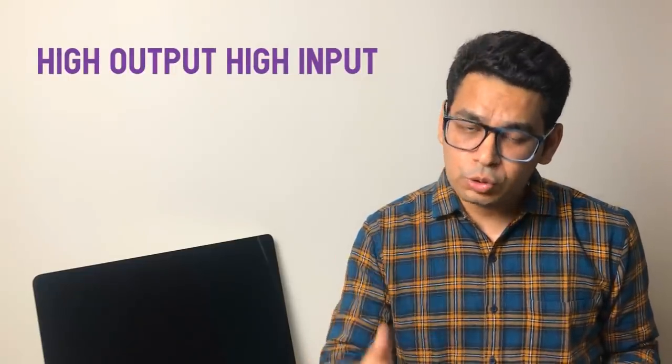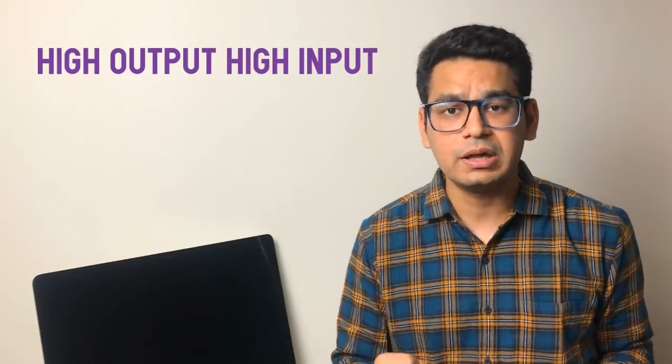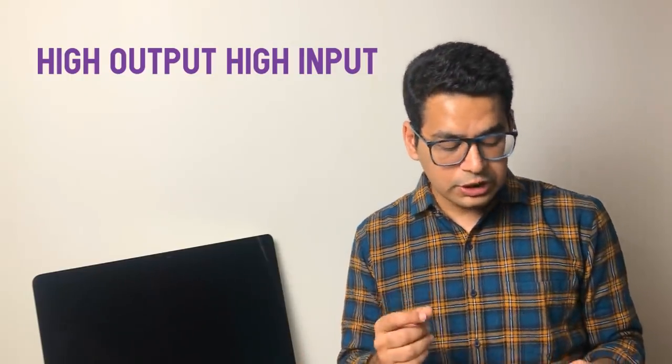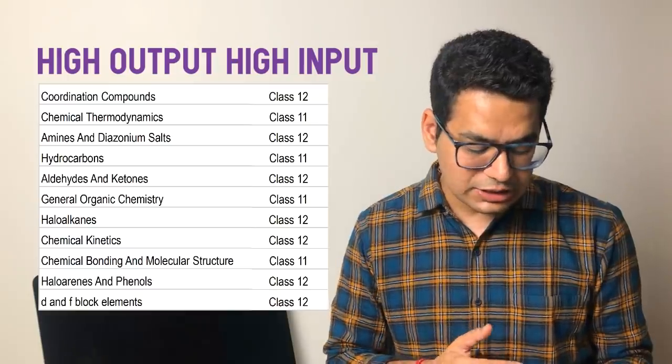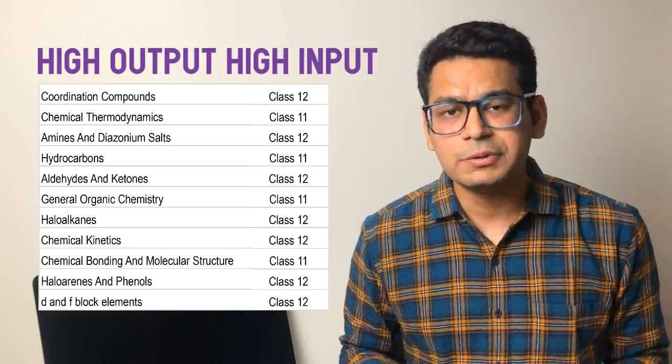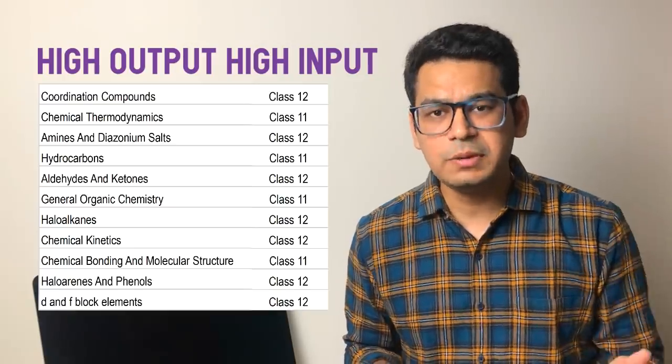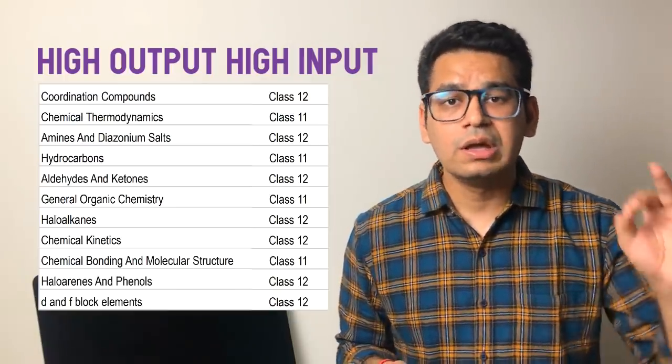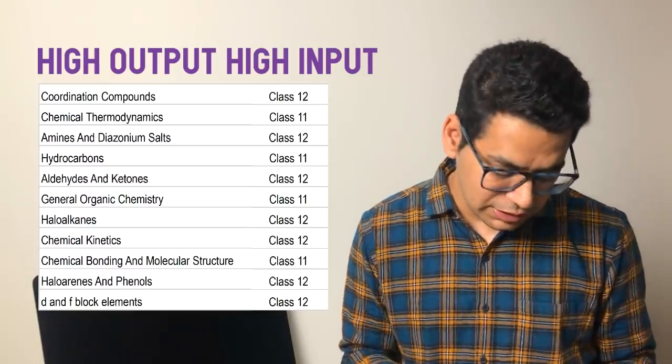Next is high output, high input. Meaning you have to give high input - input means you have to put in stamina, show determination, there will be big chapters, you have to read theory, you have to solve questions. But what will be the benefit? Questions will also come from them on the final day. Right? So in this if you notice, coordination compounds, chemical thermodynamics, amines, hydrocarbons, aldehydes, GOC, haloalkanes. So in this if you notice, most chapters will come from organic or inorganic chemistry. Why will they come? Because first, questions tend to be tricky in organic chemistry. Inorganic chemistry questions may also be easy, but doing them will take high input. That is where it becomes difficult. Organic chemistry is both - questions can be tricky, plus you may have to spend more time on it. That's why it's generally kept in high input.